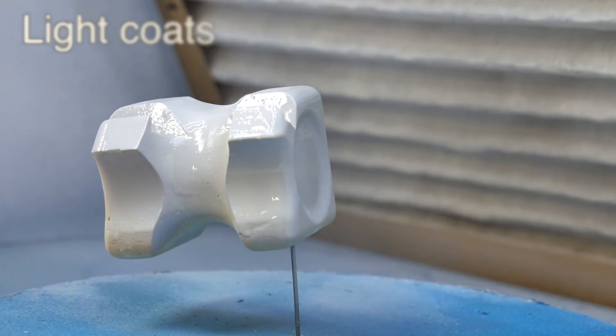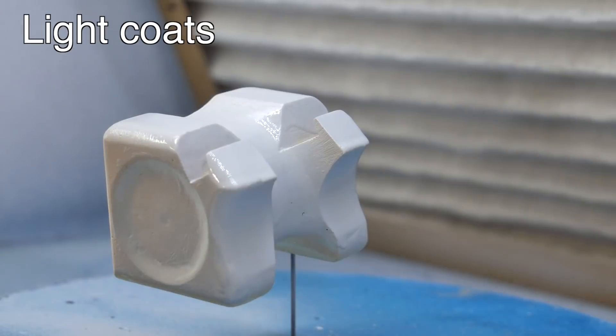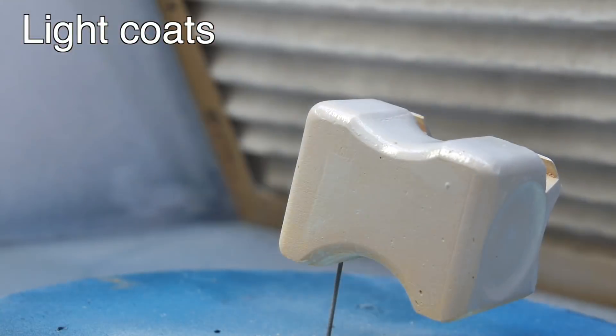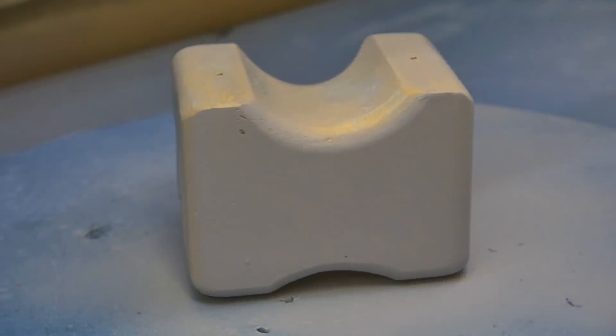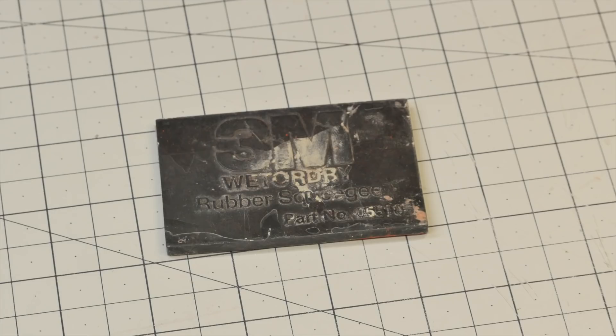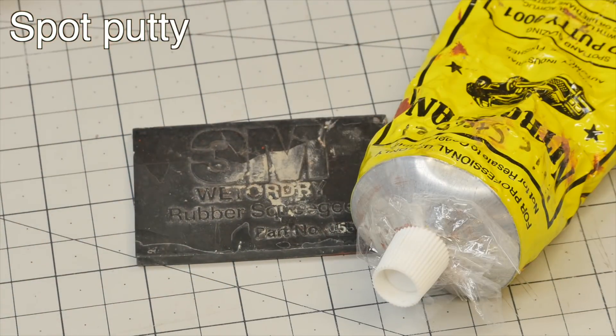We're going to start with a good quality automotive primer. I'm using a Duplicolor primer that I got from the automotive supply store. Do not use Rust-Oleum. Again, don't ever use Rust-Oleum. You've been warned.